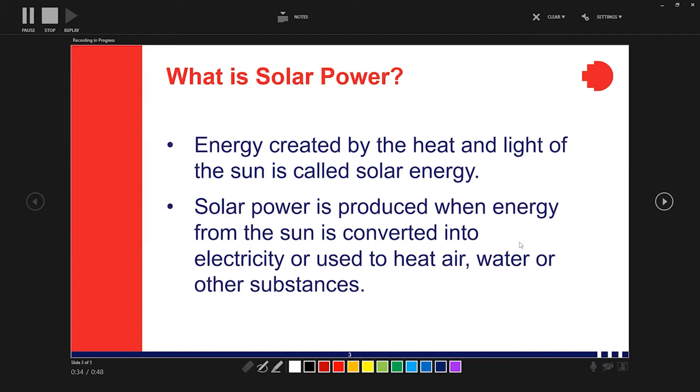Solar power is produced when energy from the sun is converted into electricity or used to heat air, water, or other substances. So I've finished the first and second bullet points, and everything I'm saying right now can also be edited out. So let's stop the recording now.